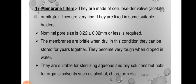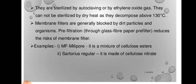Membrane filters are made of cellulose derivative acetate or nitrate membranes. They are very fine and fixed in suitable holders. Nominal pore size of 0.22 ± 0.02 mm or less is required. The membranes are brittle when dry and can be stored for years in this condition. They become very tough when dipped in water. They are suitable for sterilizing aqueous and oil solutions but not for organic solvents such as alcohols or chloroform. They are sterilized by autoclaving or by ethylene oxide gas. They cannot be sterilized by dry heat as they decompose above 130 degrees centigrade. Membrane filters are generally blocked by dry particles and organisms; pre-filtration through glass fiber paper pre-filter reduces this risk. Examples for membrane filters are MF Millipore, a mixture of cellulose esters, and Sartorius, made up of cellulose nitrate.